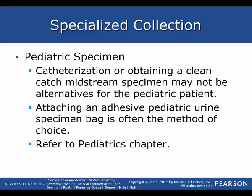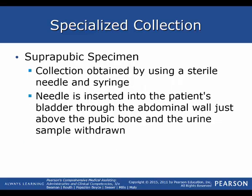Because this is often the method of choice, we are going to learn how to do this, so hopefully in your procedures you have read through this. A suprapubic specimen is collected by using a sterile needle and syringe. The needle is inserted into the patient's bladder through the abdominal wall just above the pubic bone, and the urine sample is withdrawn.